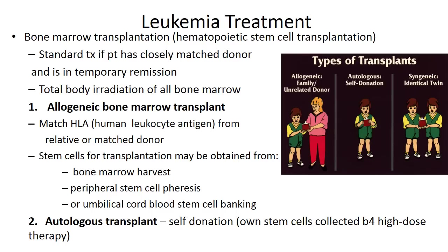Stem cells can be obtained from bone marrow harvest, from peripheral stem cell apheresis, or from umbilical cord blood stem cell banking — using cord blood stem cells for these bone marrow transplants.